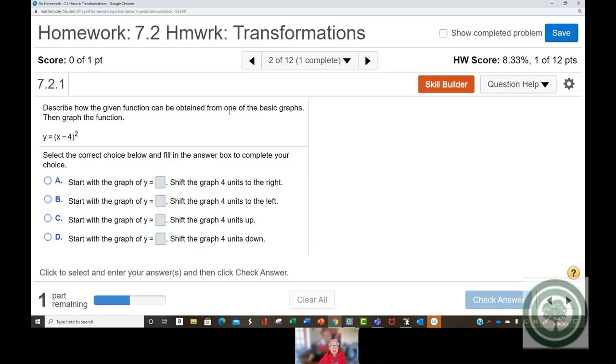Now, describe how the given function can be obtained from one of the basic graphs. Okay, then graph the function. Now, notice this. How do you tell what the basic graph is if they don't tell you? Look at the letter x. And then look at the exponent. Or if it's absolute value bars, or a square root sign, or a cube root, you want to get to where you can classify these things.